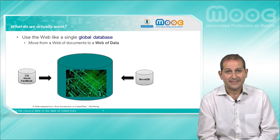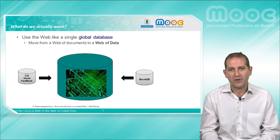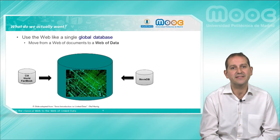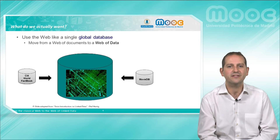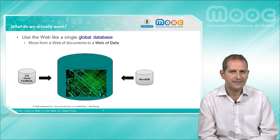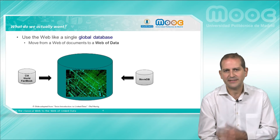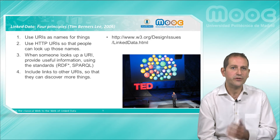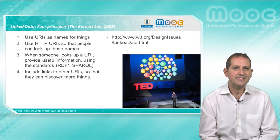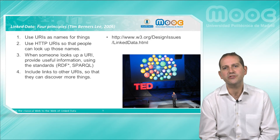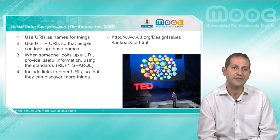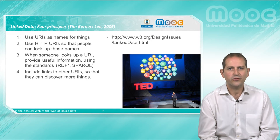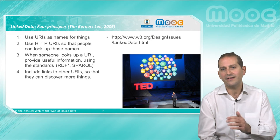That is, it would be great to be talking about a web of data instead of a web of documents, as we can consider today's web. How can we achieve this? Well, in 2006 Tim Berners-Lee proposed using four basic principles for the publication of data on the web, on what we call linked data.